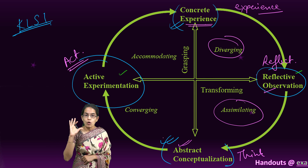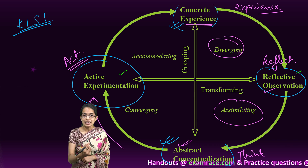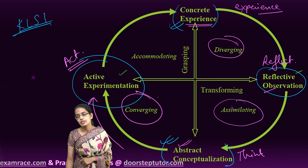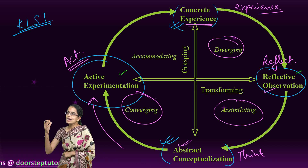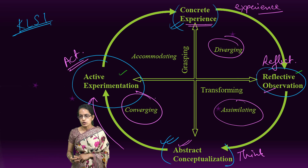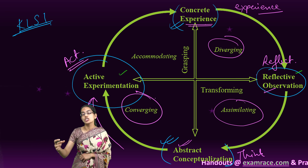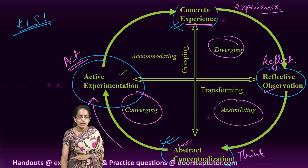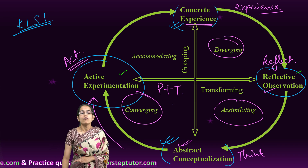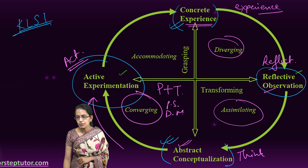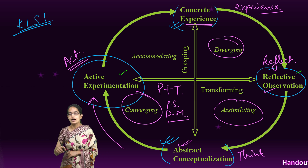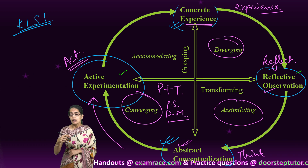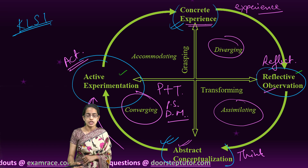Between the abstract concept that has been formed and the active experimentation that occurs, we understand this phase as converging. The converging phase is where practical ideas are integrated with theoretical concepts, and problem solving and decision making become a priority at this stage. Through convergence, we are integrating practical and theoretical views. A good example in the formal education system would be experimental learning, learning through laboratories, or learning through practical work or project work.